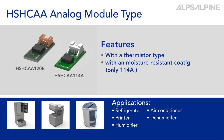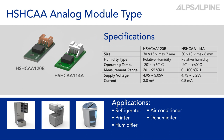The HSHCAA006A is also available as an analog humidity sensor module type. The HSHCAA00120B is designed with a thermistor, and the HSHCAA00114A is designed with a thermistor with the added moisture restraint coating.